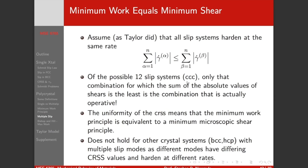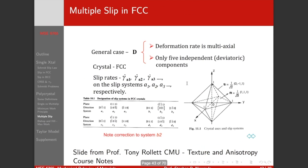That's the big idea behind the Taylor model: we need five slip systems, we have 12, and we decide which five of the 12 are going to be activated by deciding which five require the minimum amount of shear to get us to our prescribed deformation.